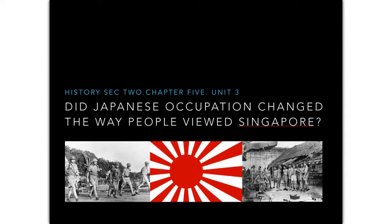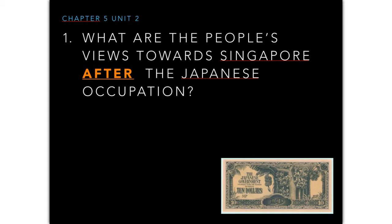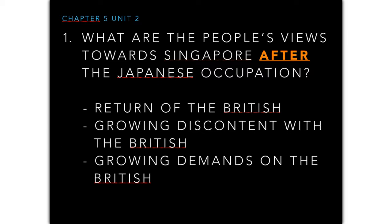Welcome to the final unit, Unit 3, on how the views of Singaporeans have changed during the Japanese occupation. In this lesson you'll need your textbook, a pair of highlighters, and it would be good to take down some important key points. In this unit we are going to learn about people's views towards Singapore after the Japanese occupation, and how those views changed.